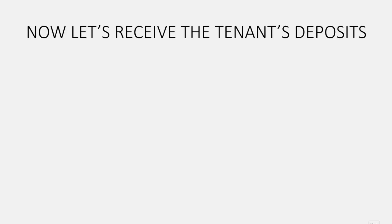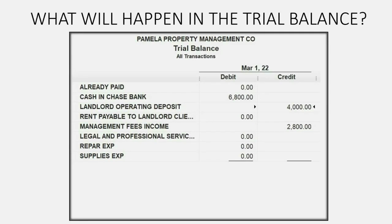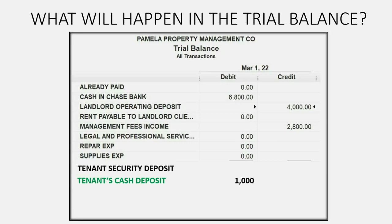Now let's record receiving the tenant's deposit. On March 1, we received $1,000 from Betty Boop for her security deposit. We designated a specific bank account called Tenant's Cash Deposit, and this is the first deposit into this special bank account for $1,000. Because if Betty suddenly moves, we owe her the money back, so we also have a liability account called Tenant's Security Deposit which shows up for $1,000.